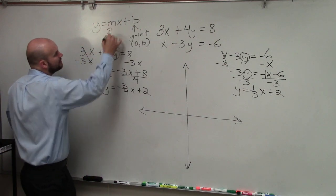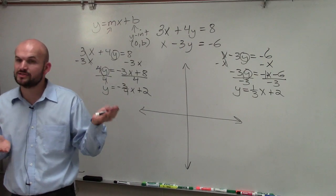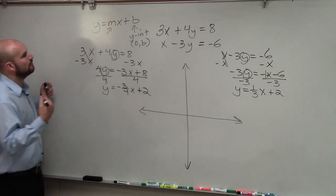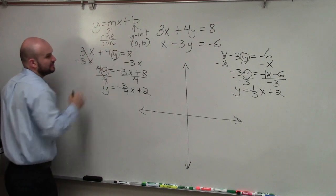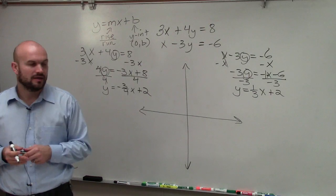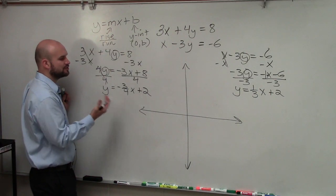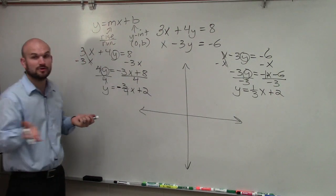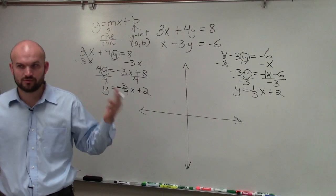Remember, slope is a ratio of the change in the values of the y-coordinates over the change in the x-coordinates between any two points. When we're dealing with slope, we always want to write it as a fraction. You should be familiar with rise over run. If you have a slope that is a whole number, like 2, just put it over 1 so it represents a fraction.